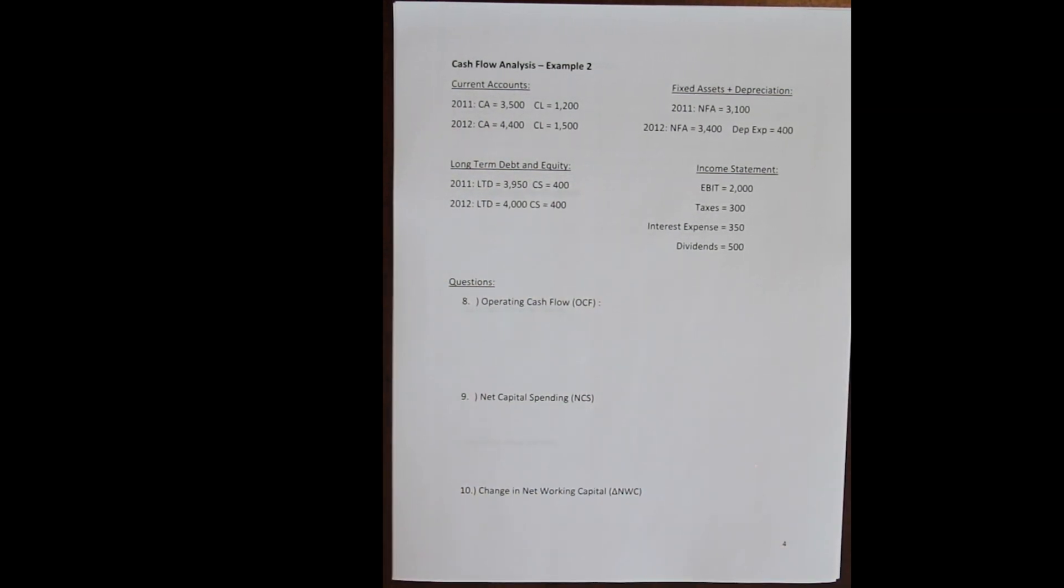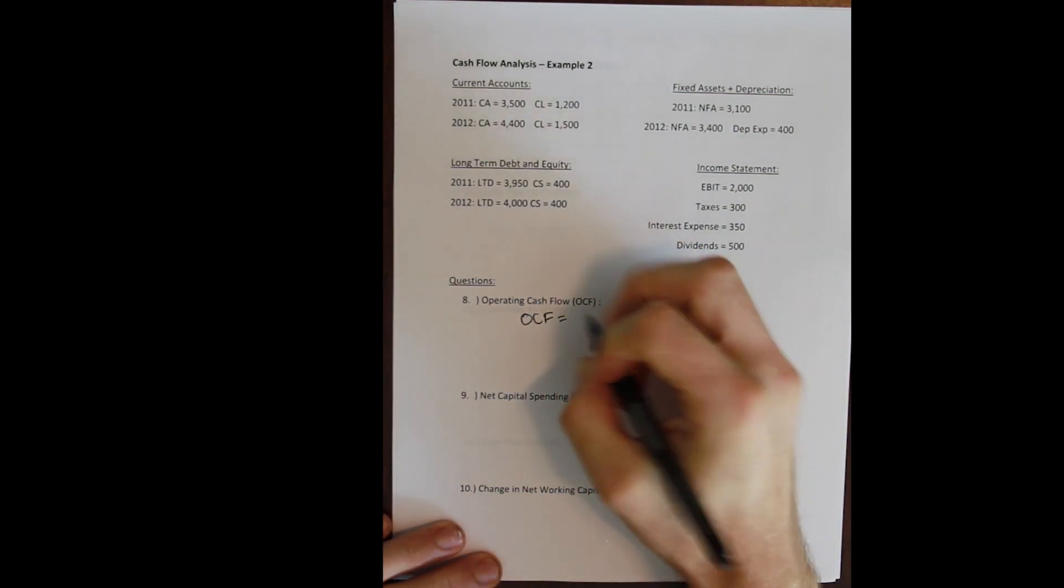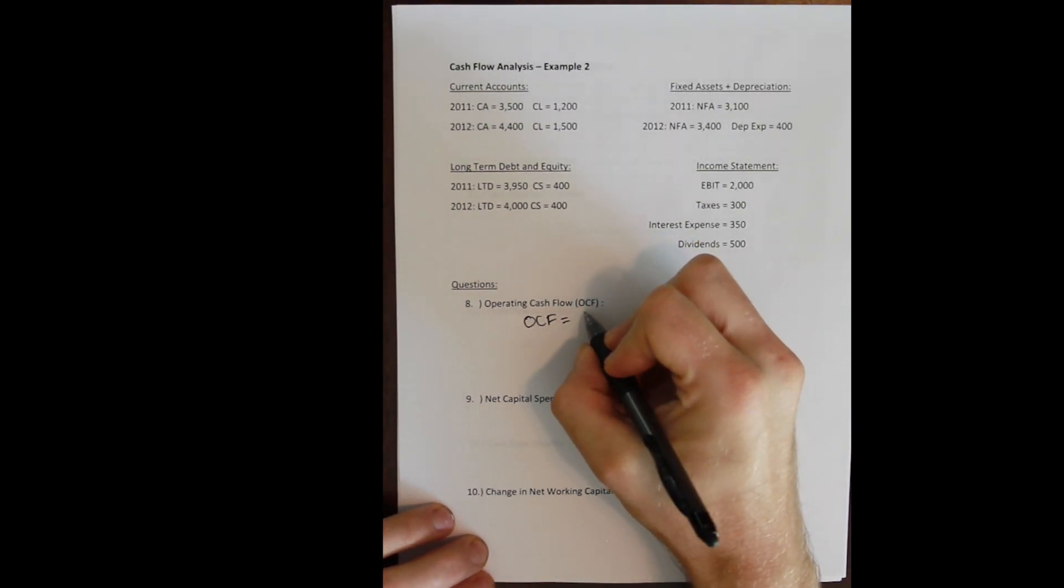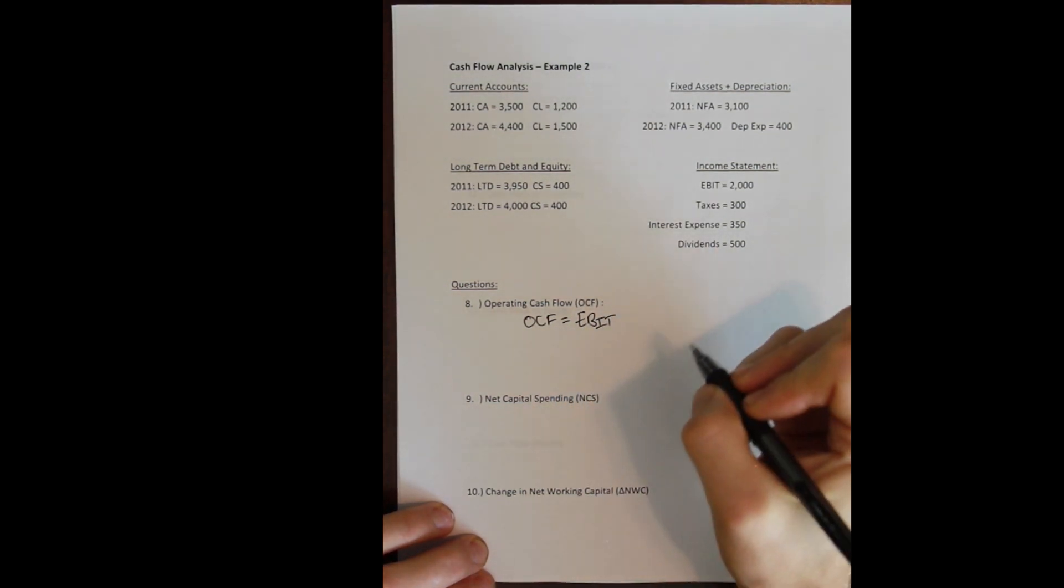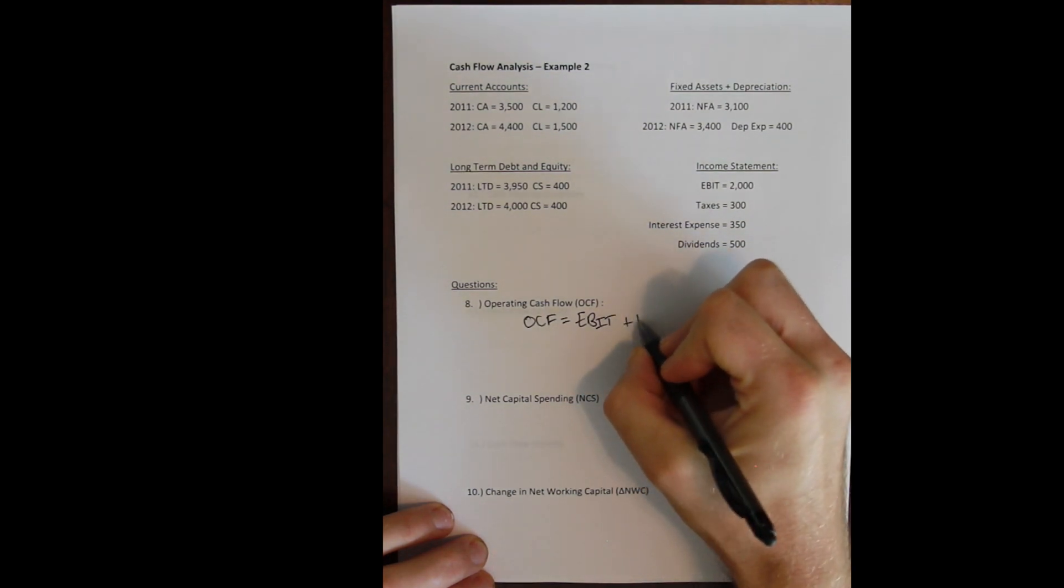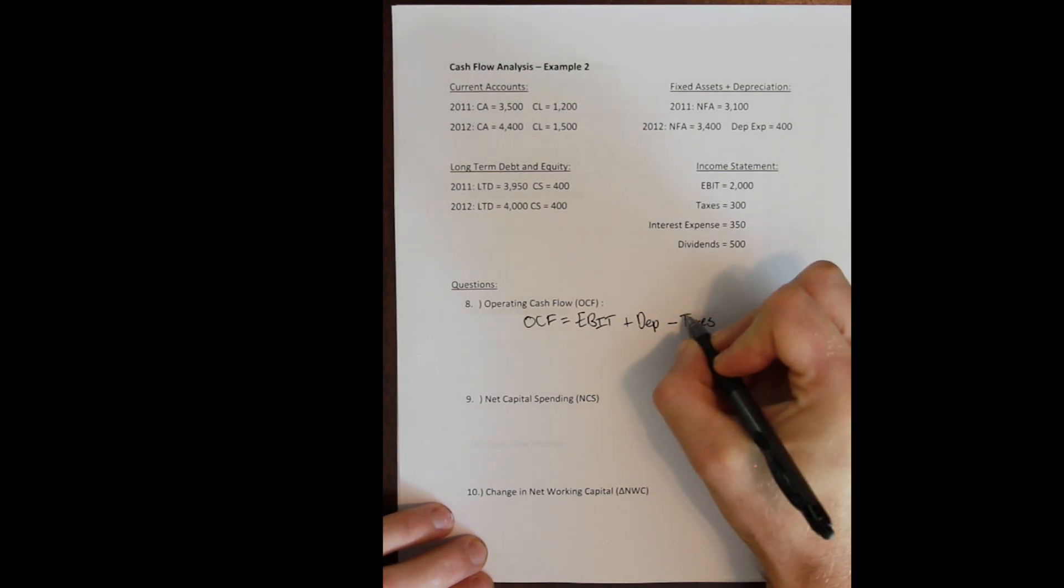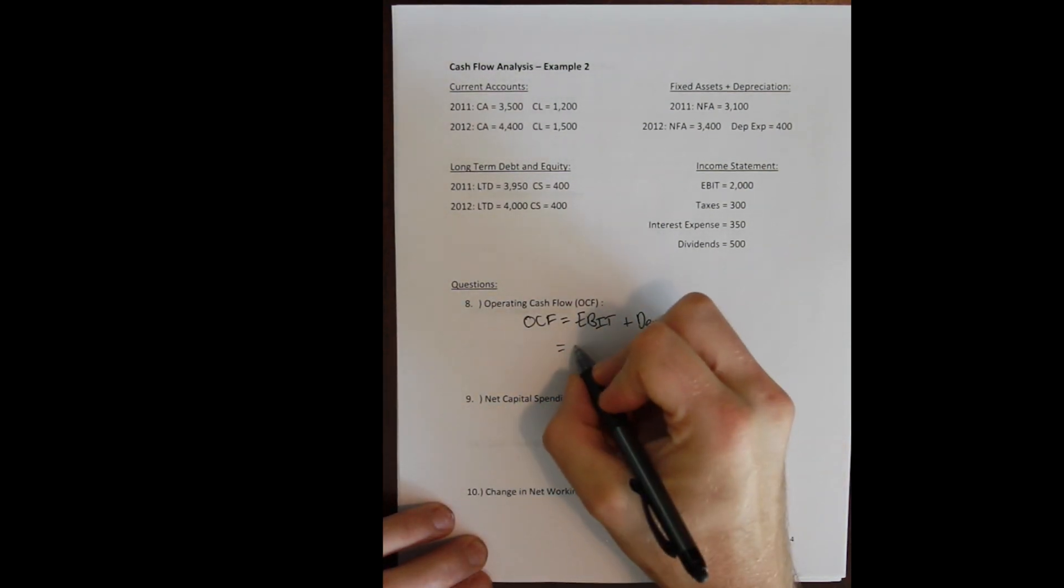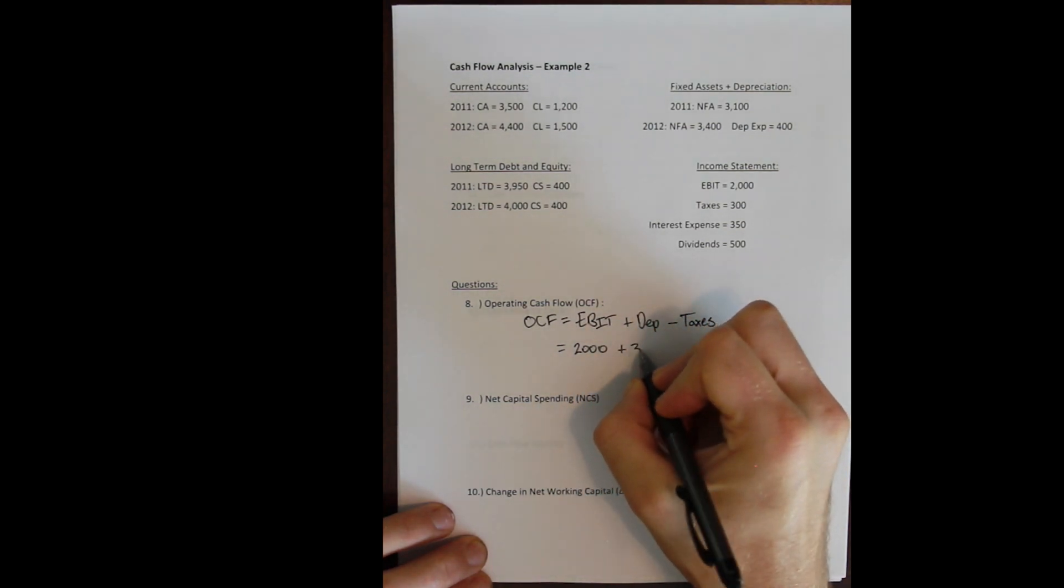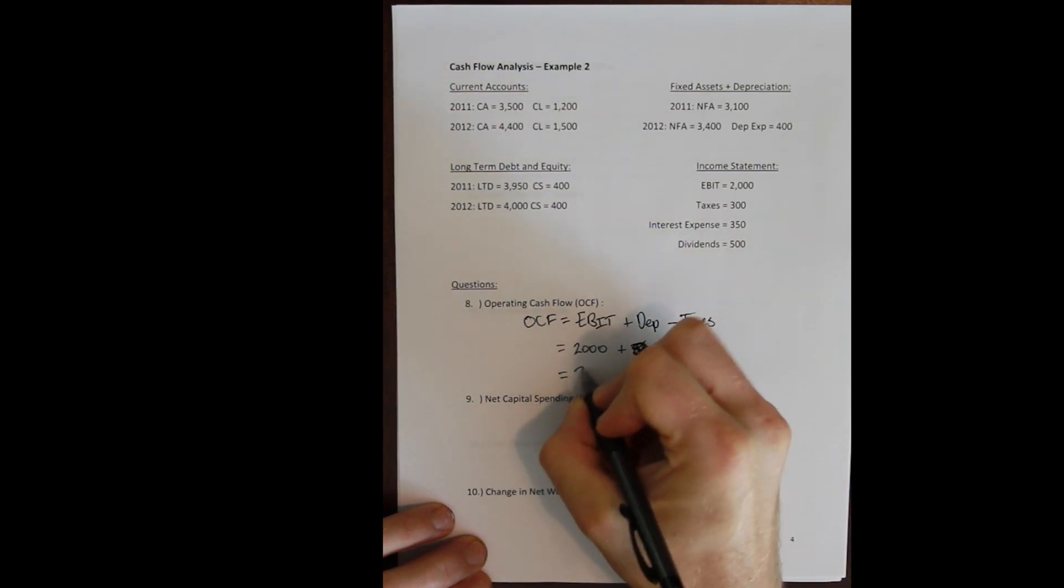But I'll do it again here for you. We'll go in exactly the same order, so we'll start with operating cash flow. This is the money that the firm generates and spends during its normal operations. So EBIT is revenue minus costs minus depreciation. We add back depreciation because it's not a cash expense, and we only want to look at cash flow here. Then we subtract taxes because taxes is our remaining cash expense. All this comes from the income statement. EBIT of 2000 plus depreciation of 400 minus taxes of 300 gives us an operating cash flow of 2100.